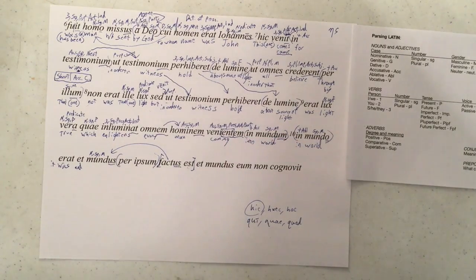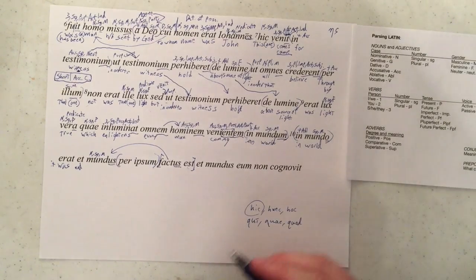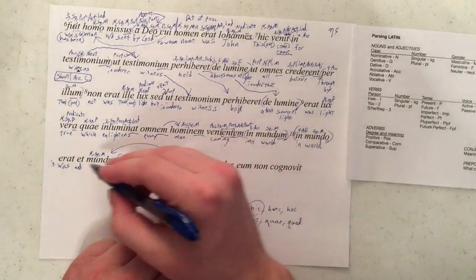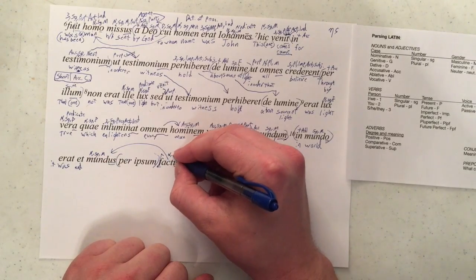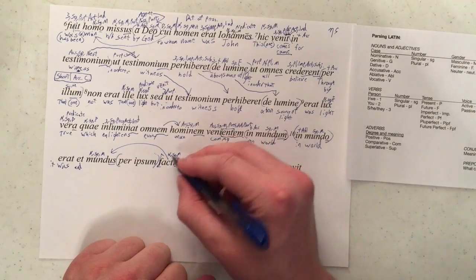This is a periphrastic verb. It's a roundabout way of saying an action in Latin. They have to use more than one word to do it. So these two go together. We know this one is going to be nominative, singular, masculine. Verbs don't normally have gender or case.